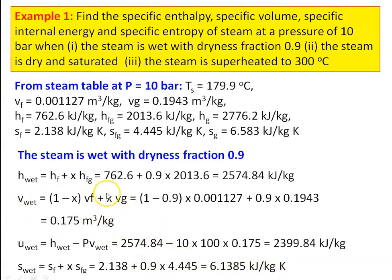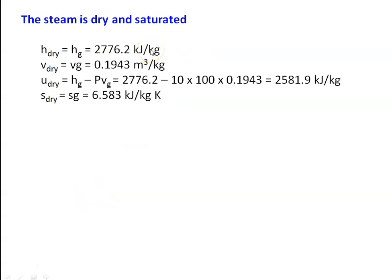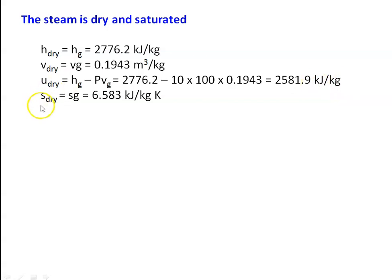These are all properties of wet steam. For dry and saturated steam, H = Hg = 2776.2 kJ/kg, directly from the steam table. V = Vg = 0.1943 m³/kg, also directly from the steam table. Internal energy U = Hg − P·Vg = 2776.2 − 10×100×0.1943 = 2581.9 kJ/kg. Entropy S_dry = Sg = 6.583 kJ/kg·K, directly from the table.